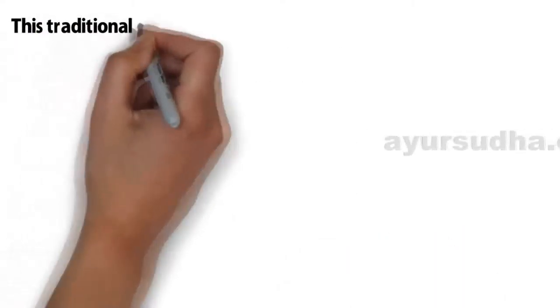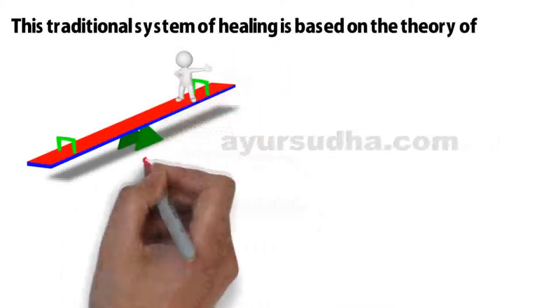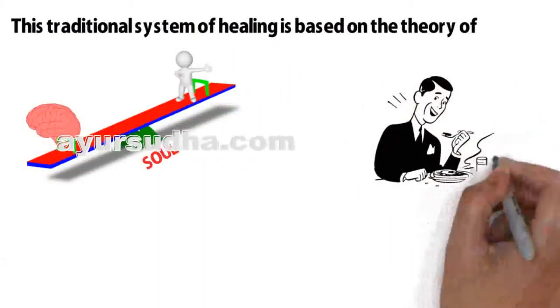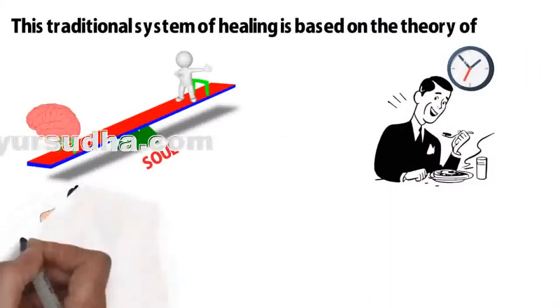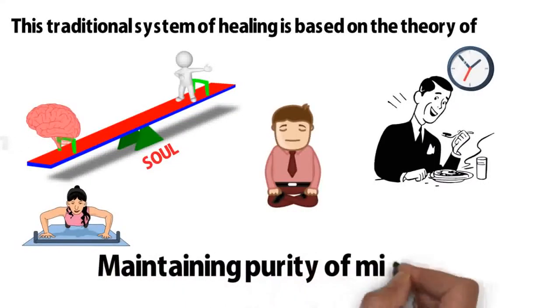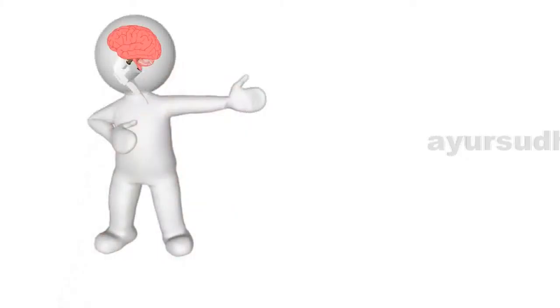This traditional system of healing is based on the theory of balancing the body, the soul, and the mind. This balancing includes eating the right thing at the right time, adapting to daily lifestyle habits, daily meditation, and maintaining purity of mind and soul. There is a strong connection between the mind and the body.